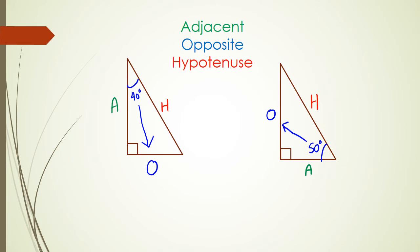It's really important that you guys understand this. The key to solving trigonometric problems is getting the sides right, because if you get the sides right then you can follow up with the problem itself. But if you get the sides wrong then you're going to have some issues solving these problems.